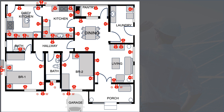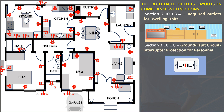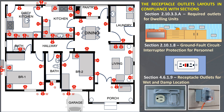The figure shows a floor plan of dwelling units where receptacle outlets were already in place. This layout complies with the following sections: Section 2.10.3.3A, Required Outlets; Section 2.10.1.8, Ground Fault Circuit Interrupter Protection for Personnel; and Section 4.6.1.9, for Wet and Damp Locations.